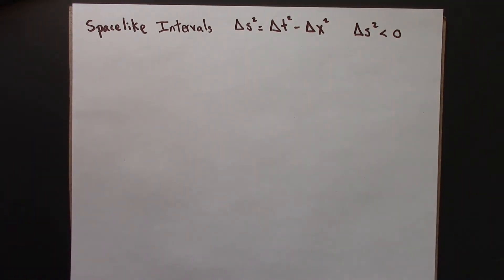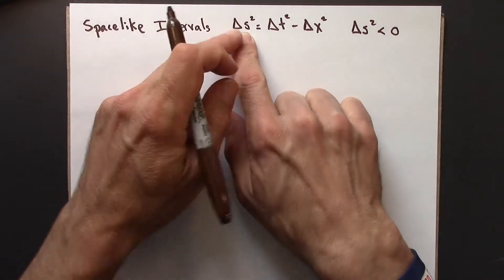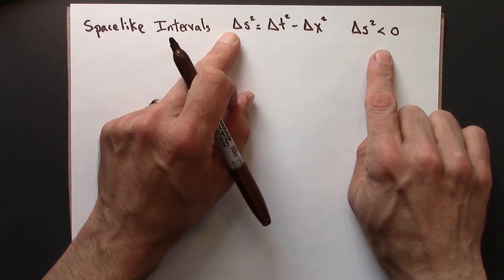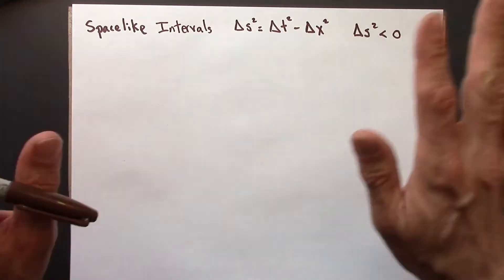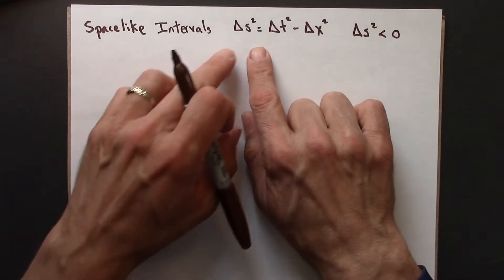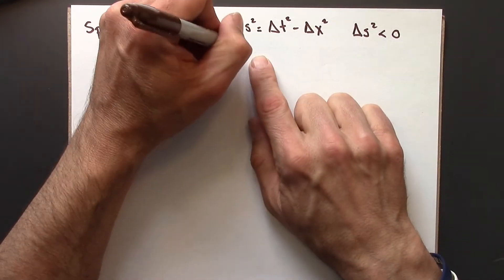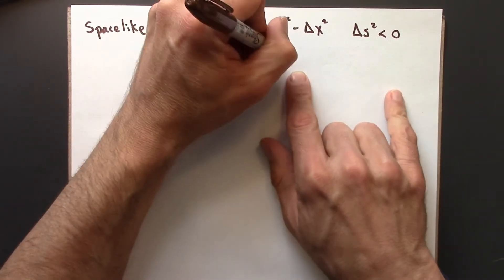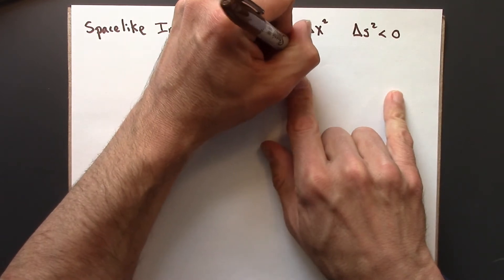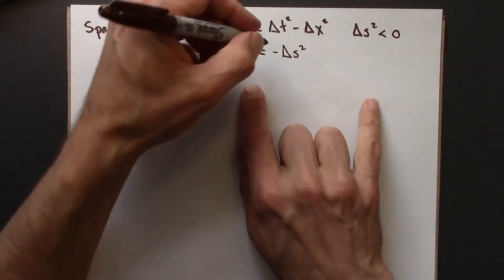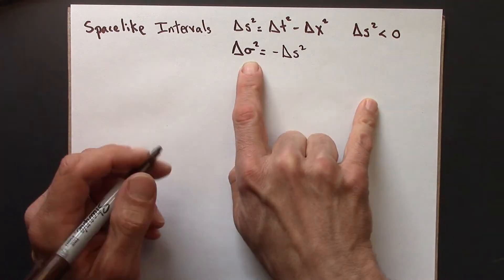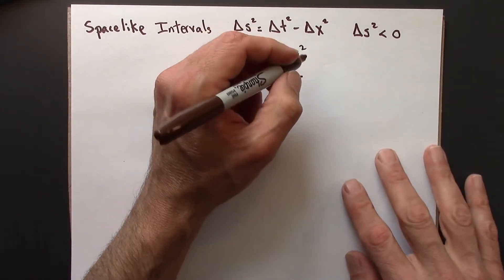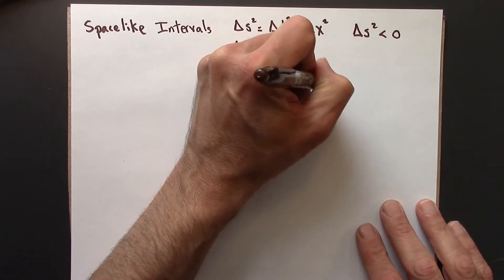Before going on, I want to mention that seeing delta s squared being equal to a negative number can be unsettling, because it suggests there might be imaginary numbers lurking around. So often one defines delta sigma squared, basically just makes it positive. So that's a sigma, a Greek lowercase sigma. And this quantity is known as the spacetime separation.